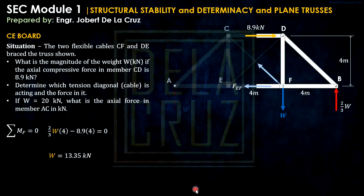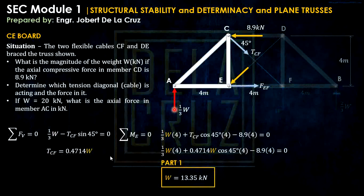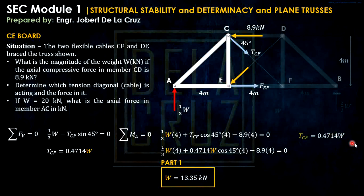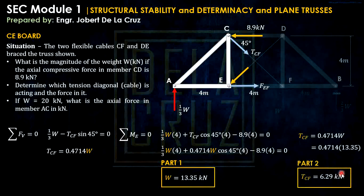Returning to the original solution: for Part 2, the tension in cable CF is TCF = 0.4714 W = 0.4714 times 13.35 = 6.29 kilonewtons. That is the force in the tension diagonal cable, and of course it is tension.